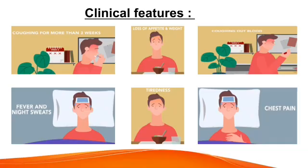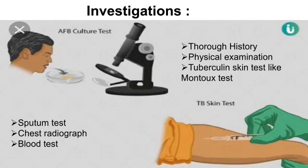Clinical features: Symptoms of active TB disease include coughing for more than 3 weeks, loss of appetite, loss of weight, coughing out blood, fever and night sweats, feeling of tiredness and chest pain.